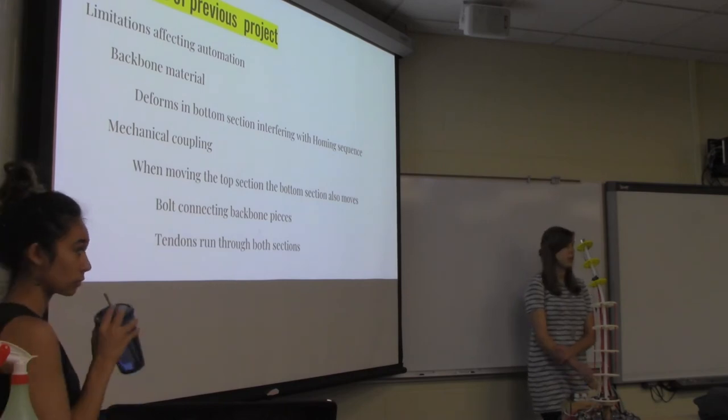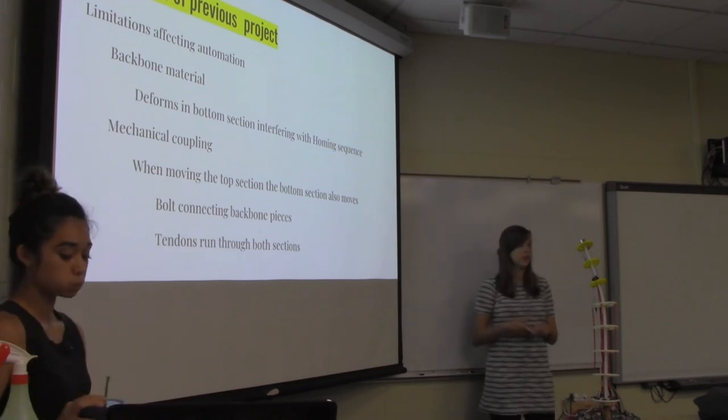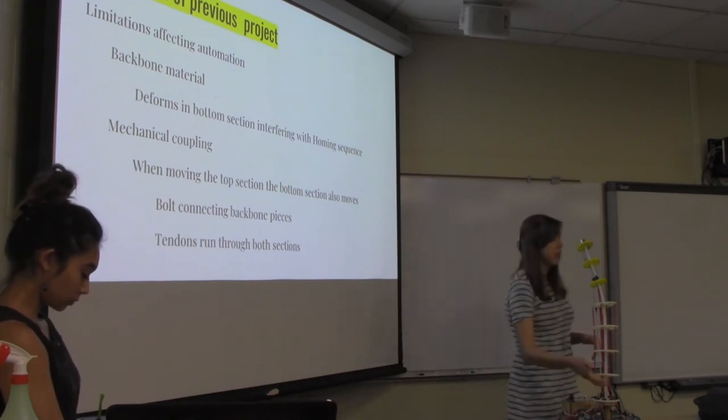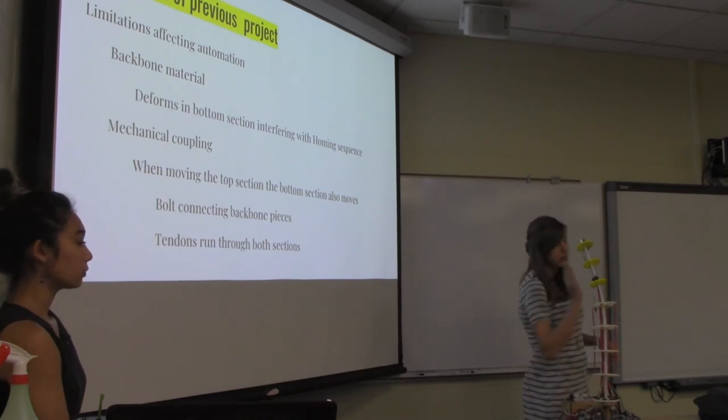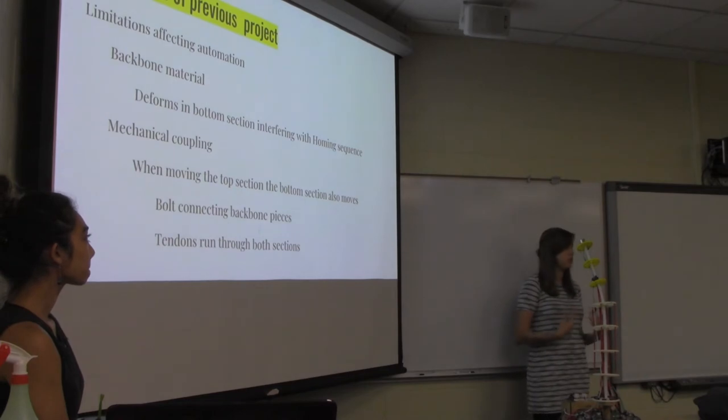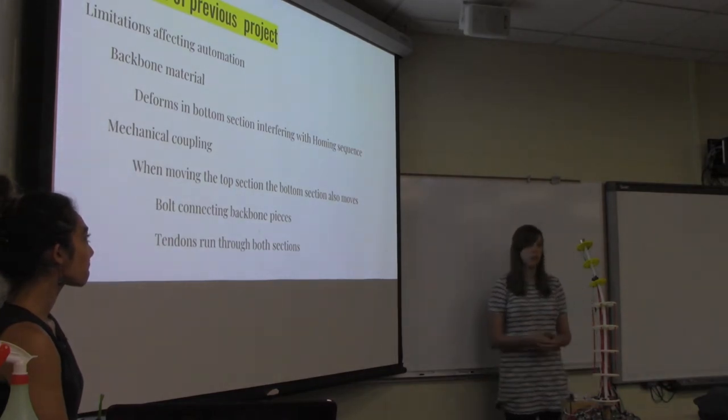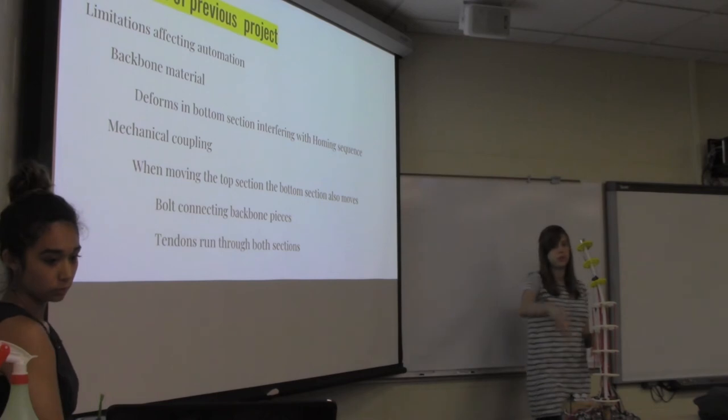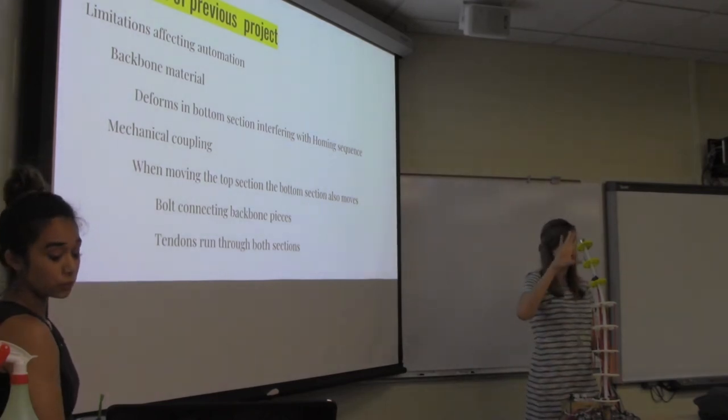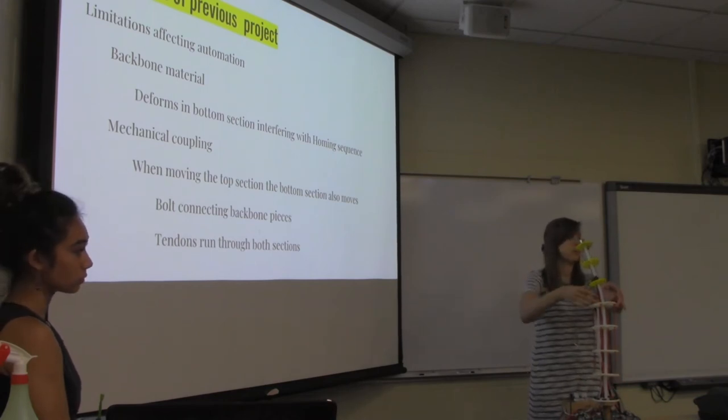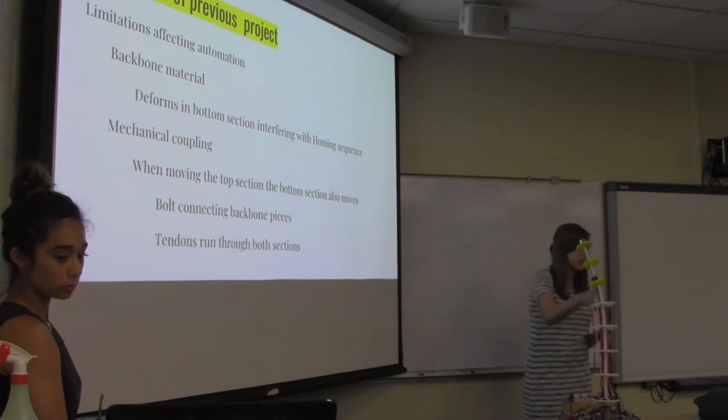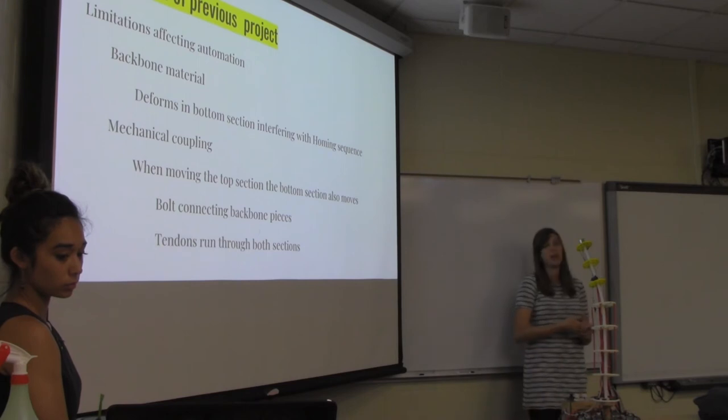With last year's project, they had some limitations based on their design. We focused on the ones that affected our goal of automation. A big one was their backbone material. There was deformation in this section down here that prevented it from being vertical. It had a slight curve to it. So some of the driving operations and homing feature didn't work as well as they were hoping. There's also mechanical coupling. With continuum robots, you should be able to operate the top and bottom sections as separate sections. But they noticed with the bolt in the middle, some of the force was transferred down, which prevented the decoupling. Also with having the tendons running through the bottom section that controlled the top section, some of the force was placed into the bottom section. So the whole robot would move as a single piece instead of allowing for the two disjoint sections.